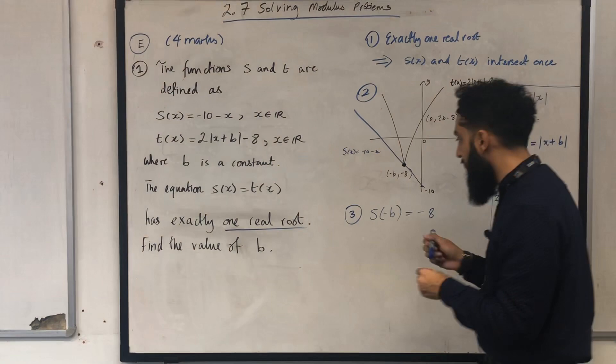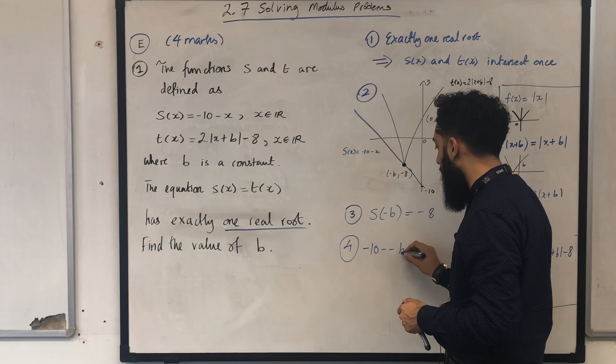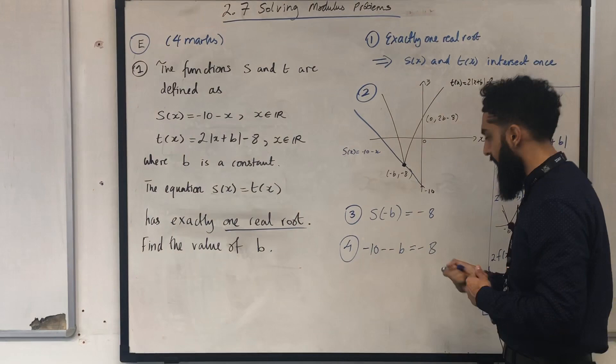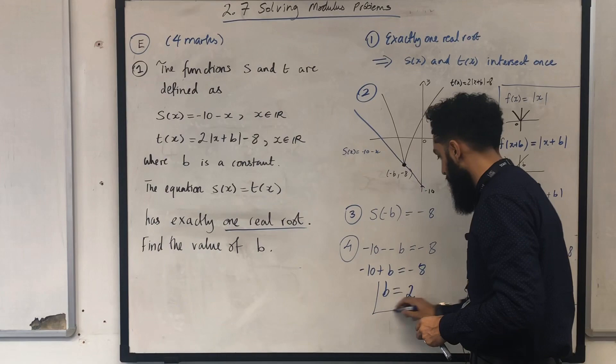Step four in the solution: replacing x with minus b, I write down minus 10 minus minus b equals minus 8. Solving this equation for b, I get b equal to 2. And that is my solution.